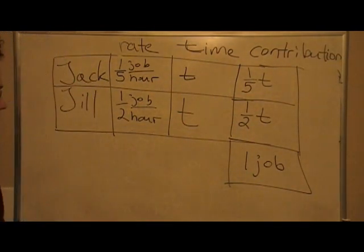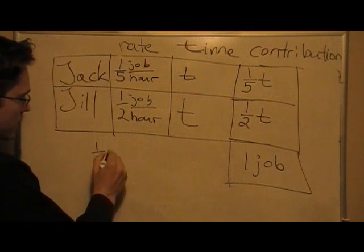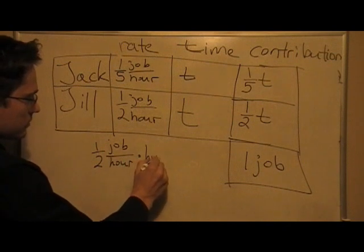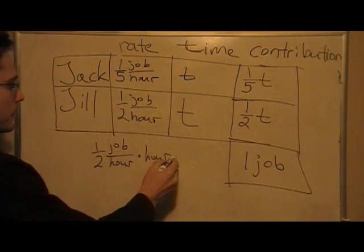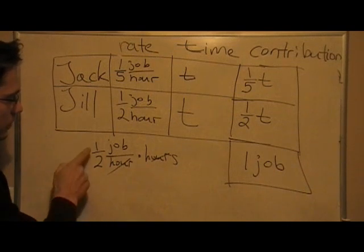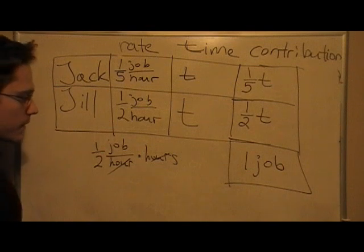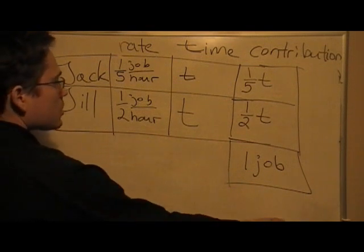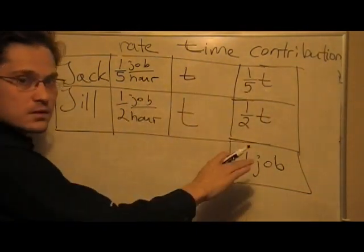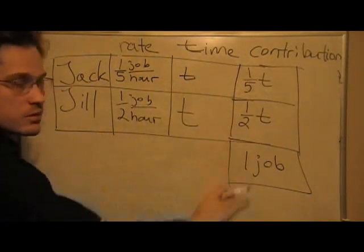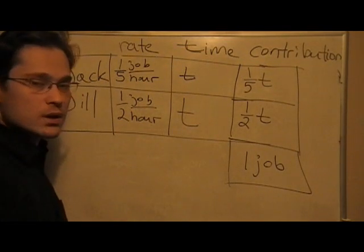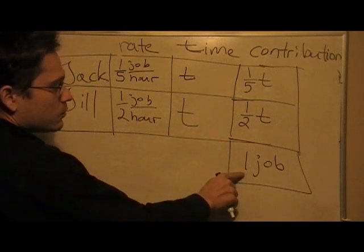So, pretend that you have the following. One-half job per hour times the number of hours. And you see that the hours cancel, these are units, and so I'm left only with jobs, one-half job. So, that just shows us that this term represents Jack's contribution to the total job. This is Jill's contribution to the total job. And now we know that once they finish their job, that one whole job has been completed. So, we write one job.